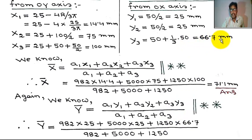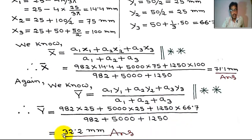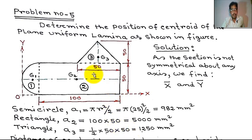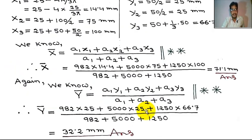Continuing: y3 equals 66.7. The denominator has A1 equals 982, A2 equals 5000, A3 equals 1250. This gives ȳ equals 40.2 mm. The position of the centroid of the composite lamina is at x̄ equals 71.1 mm and ȳ equals 40.2 mm. I hope this is clear to my students. Thank you.